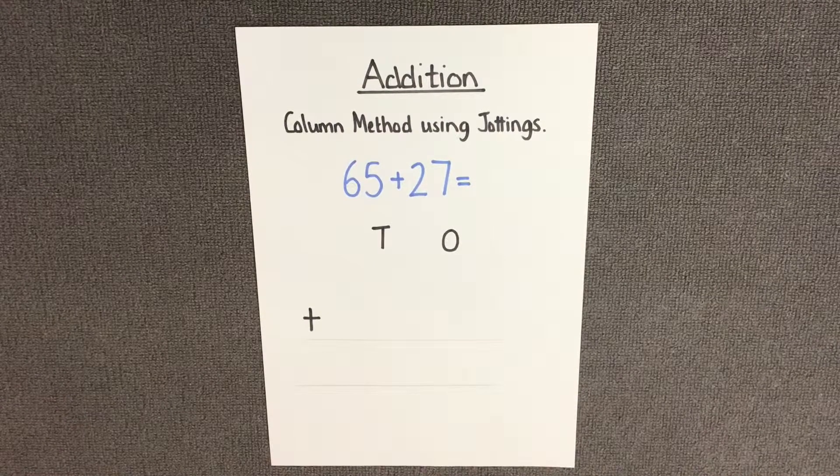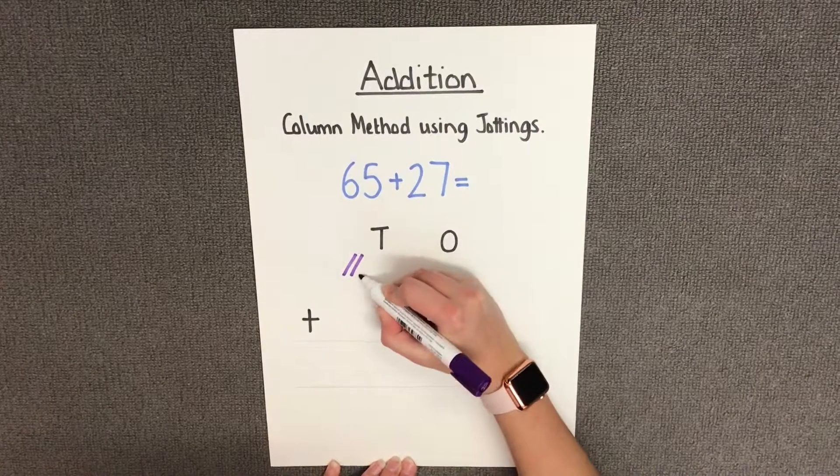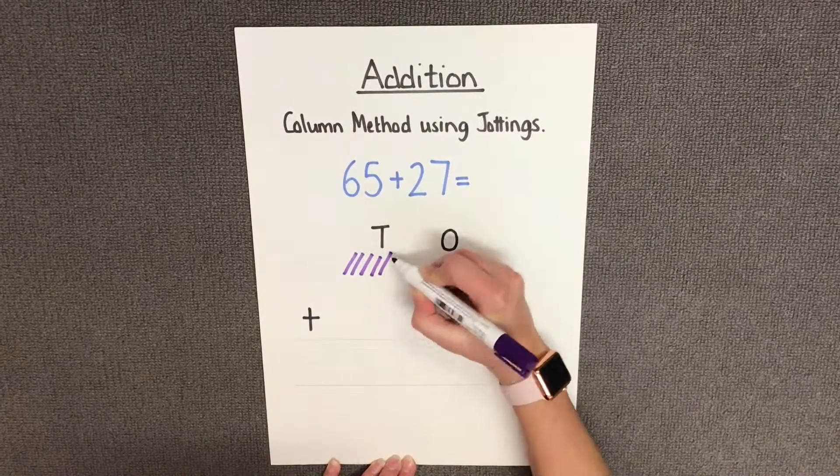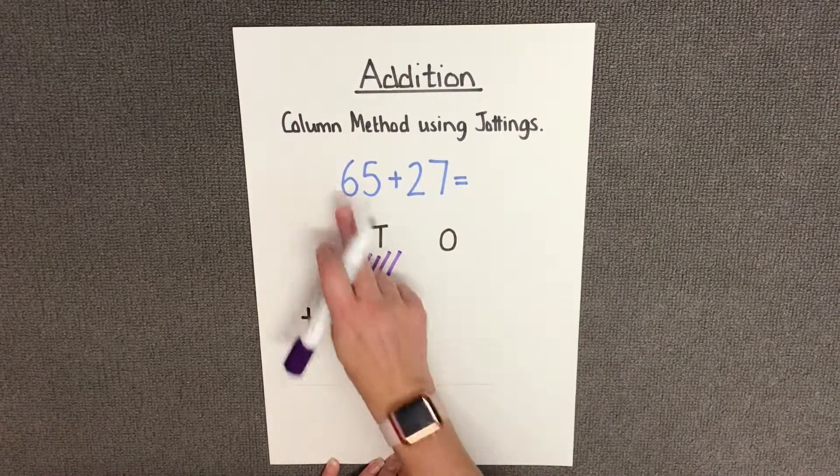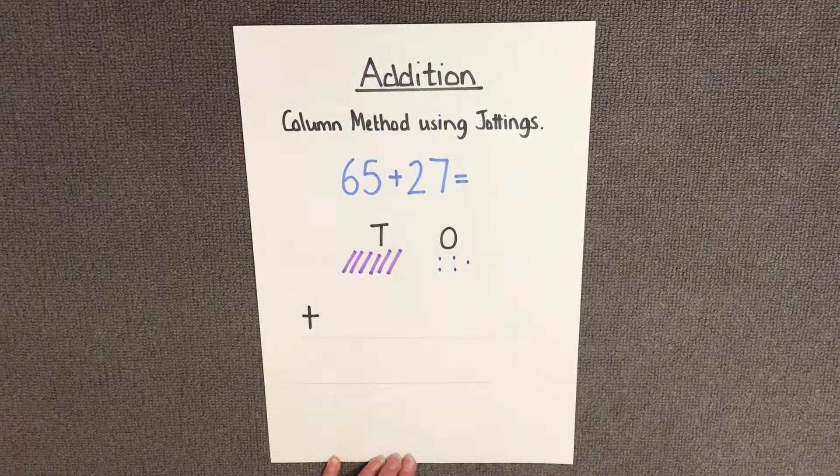Let's show the number 65 first as it is larger. So I need to have 10, 20, 30, 40, 50, 60 for 6 tens and 1, 2, 3, 4, 5 for the 5 ones.